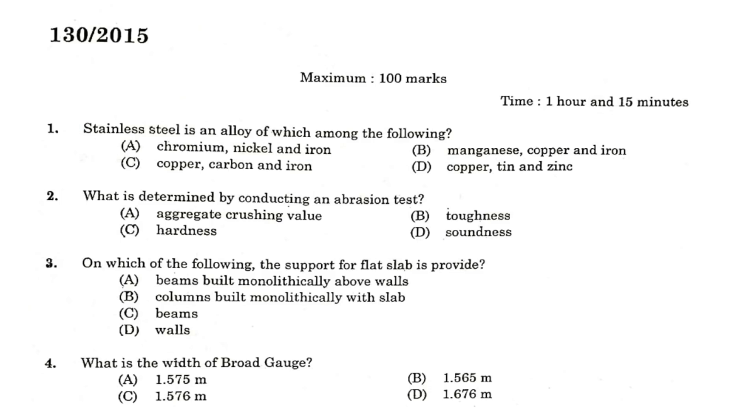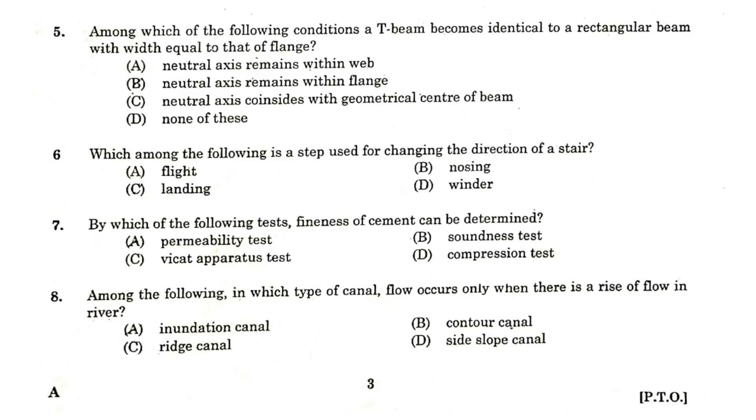A stainless steel is an alloy of? What is determined by conducting an abrasion test? On which of the following the support for flat slab is provided? Columns built monolithically with the slab. What is the width of broad gauge? 1.676 m. Among which of the following conditions a T-beam becomes identical to a rectangular beam with width equal to its flange? The neutral axis remains within the flange.